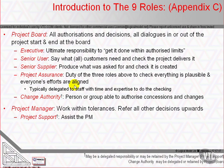The project manager has the authority to run the project on a day-to-day basis on behalf of the project board within the constraints laid down by them. The constraints are expressed by the six forms of tolerance: time, cost, scope, risk, quality and benefits. The project manager's prime responsibility is to ensure that the project produces the required products within the tolerances. The project manager is also responsible for the project producing a result capable of achieving the benefits defined in the business case.